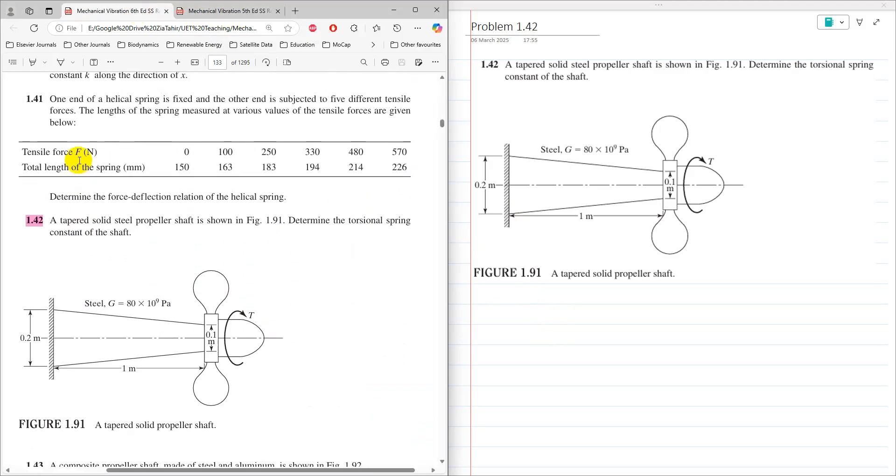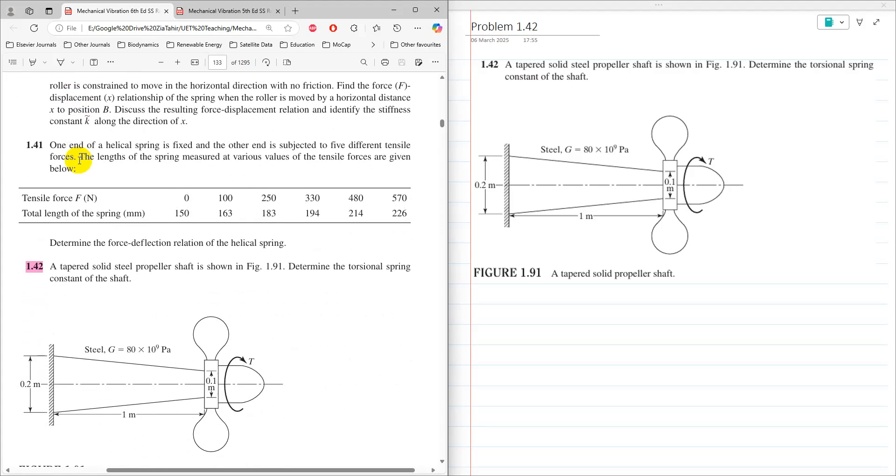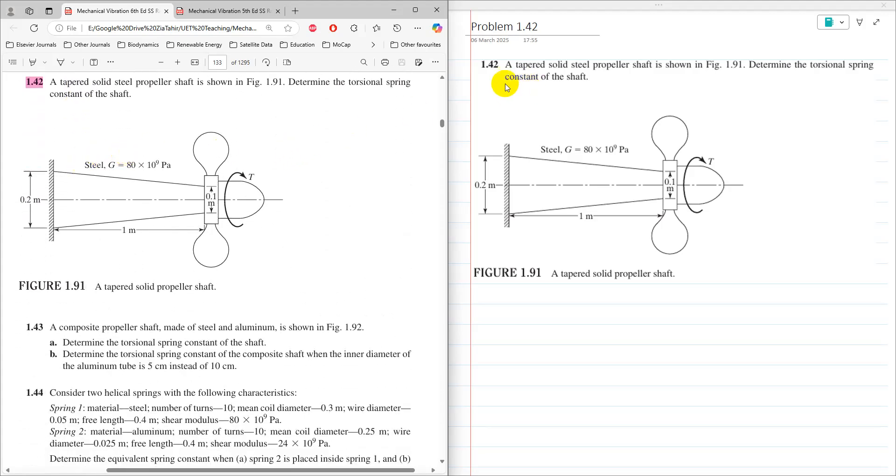So there is a problem 1.42 in the book. The statement is a tapered solid steel propeller shaft is shown in figure 1.91, determine torsional spring constant of the shaft.